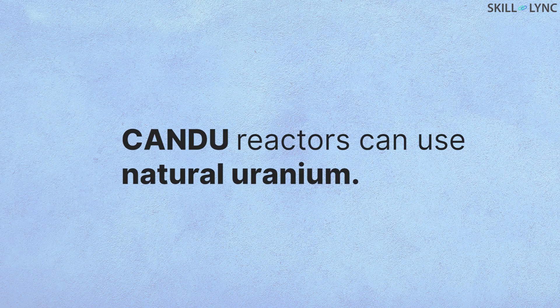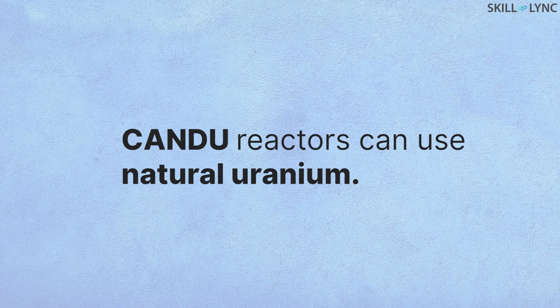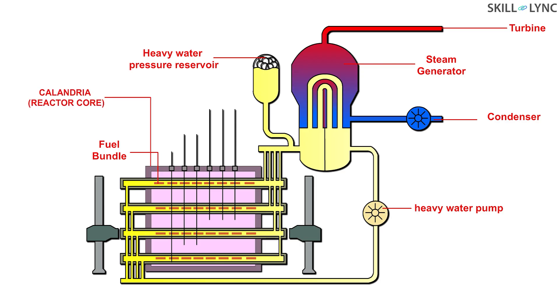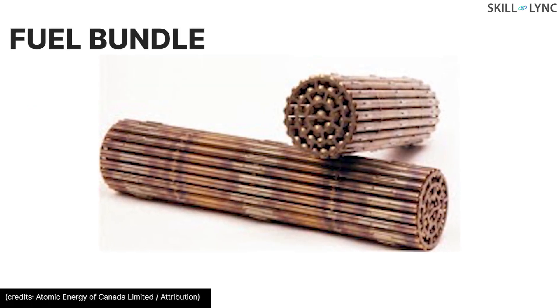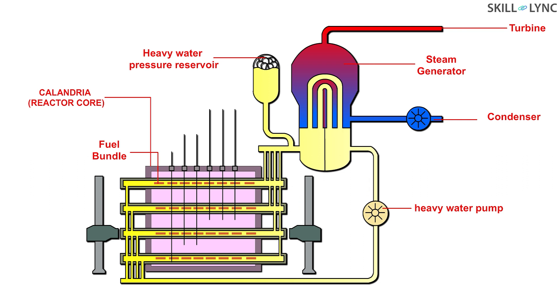Unlike other types of reactors, CANDU reactors can use natural uranium as fuel. The fuel in the reactor is arranged in a vessel called calandria. Calandria consists of an assembly of fuel bundles in the form of metal tubes.